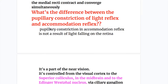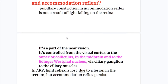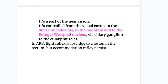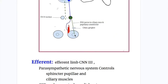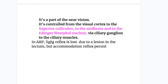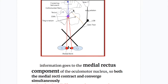The pupillary constriction in the accommodation reflex is not the result of light falling on the retina — it is a different reflex and part of near vision. It is controlled from the visual cortex to the superior colliculus in the midbrain, then to the Edinger-Westphal nucleus, and via the ciliary ganglion to the sphincter constrictor fibers. The pupillary light reflex is lost in Argyll Robertson pupil because if the tectum is destroyed, the light reflex is lost — but the accommodation reflex is preserved since it follows a different pathway from the visual cortex.